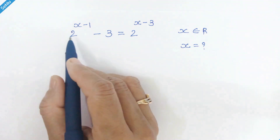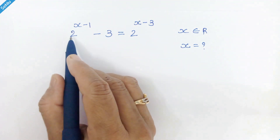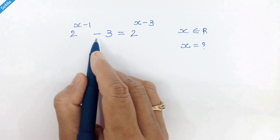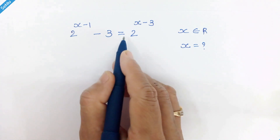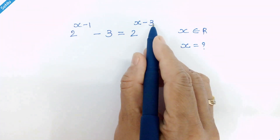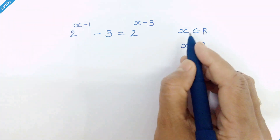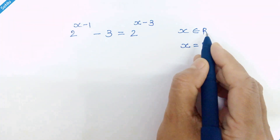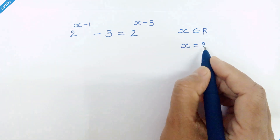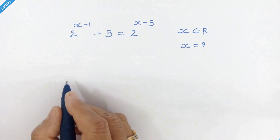Hello friends, here we have 2 raised to x minus 1 minus 3 is equal to 2 raised to x minus 3, where x is a real number, and let's solve for x. So let's start.